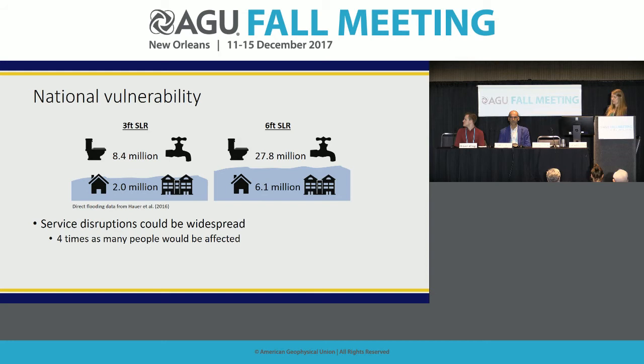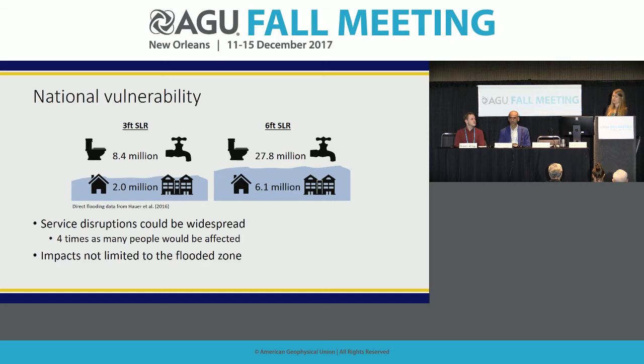Service disruptions due to flooding of wastewater infrastructure could be very widespread, affecting nearly four times as many people as previous estimates of direct flooding. The impacts of sea level rise are not contained just to the flood zone or the near coastal zone — because these infrastructure networks provide connections between the coastal zone and the rest of the community, a disruption at the wastewater plant could cascade throughout the system.